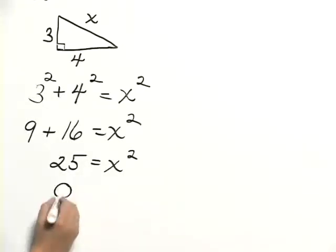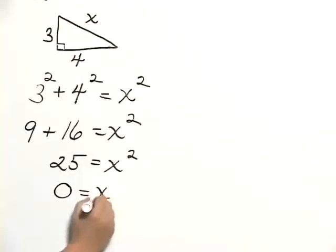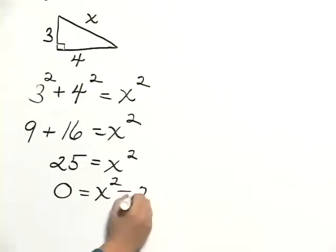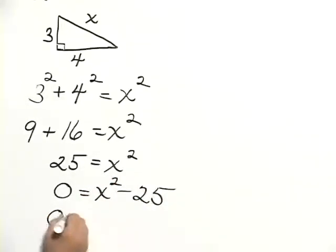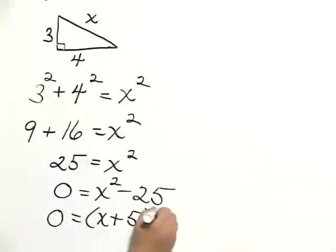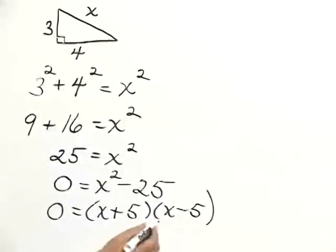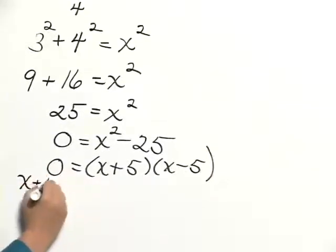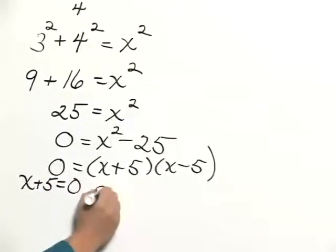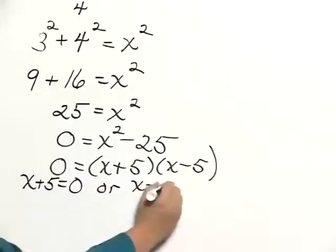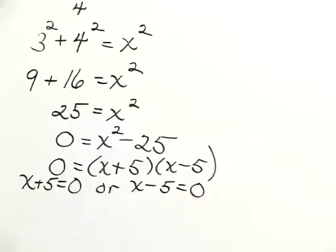So let's get 0 on one side of the equation and solve. Subtracting 25 from both sides, we have 0 equals x squared minus 25. And then we can factor 0 equals x plus 5 times x minus 5. Setting each of these equal to 0, we have x plus 5 equals 0 or x minus 5 equals 0. And this tells us that x equals negative 5 or x equals 5.